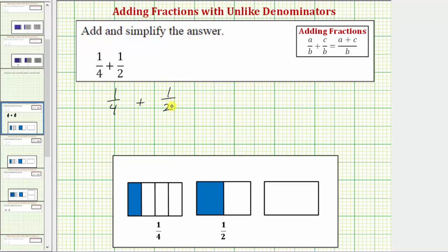So looking at the fraction of 1 half, we want an equivalent fraction with the denominator of four and therefore we multiply the numerator and denominator by two. This will give us an equivalent fraction with the denominator of four.